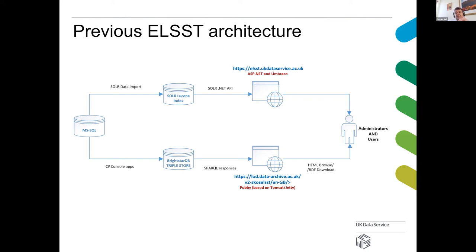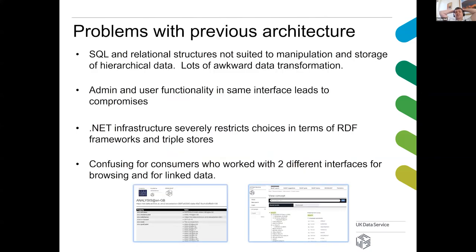A number of problems with the previous architecture: relational structures really do not suit RDF or any type of hierarchical data, requiring lots of awkward data transformations. Because we were using the same interface for administrators and users we had to make a fair few compromises with the user interface. .NET infrastructure really restricts your choices for RDF frameworks and which triple stores are available. Overall we were glad to make the move to open source because the Java landscape gives you a lot more options for manipulating RDF and the frameworks and libraries available to you. And for the UX it was confusing because we pointed consumers to two completely different interfaces, depending on whether they wanted to retrieve linked data or just browse the thesaurus.